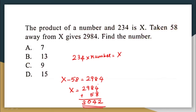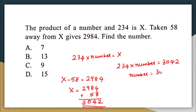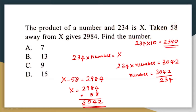So x equals 3,042. Now I know that 234 multiplied by some number gives 3,042. That number will be 3,042 divided by 234. We can also check with the options: if the number were 10, 234 multiplied by 10 is 2,340. Since we need 3,042, the answer is definitely greater than 10, so we can eliminate options A and C.